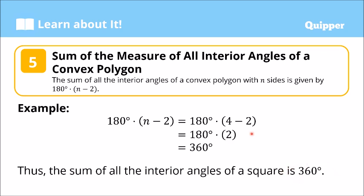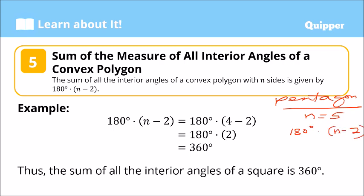How about the sum of all interior angles of a regular pentagon? Pentagon has 5 sides, so n equals 5. Using the same formula: 180 degrees times (n minus 2) equals 180 degrees times (5 minus 2) equals 180 degrees times 3. Computing: 3 times 0 is 0, 3 times 8 is 24, carry 2, 3 times 1 is 3 plus 2 equals 5. So that is 540 degrees.